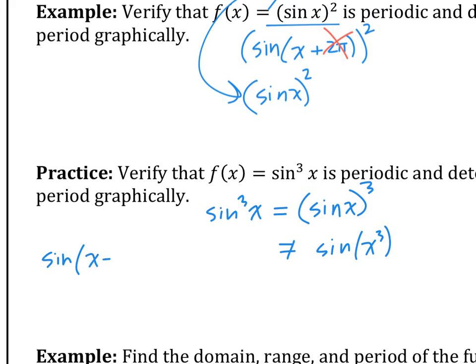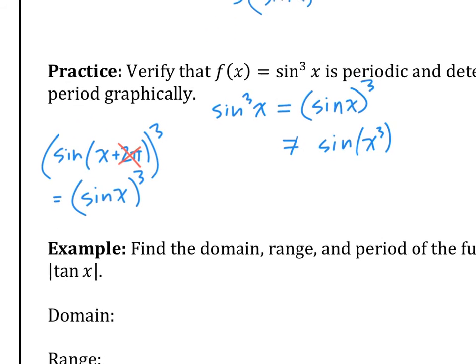So you're proving sine of x plus 2π cubed is just going to give you sine x cubed. Okay, so this is a very fast proof. All you do is just say to yourself that sine repeats itself every 2π. So this 2π is irrelevant. Therefore, this is just sine x cubed.